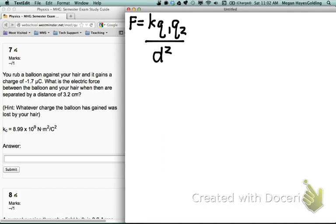Clearly the K and the D are both given in the problem, but how do I figure out the Q1 and Q2? Well, the first object you have is your balloon. The second object you have is your hair.